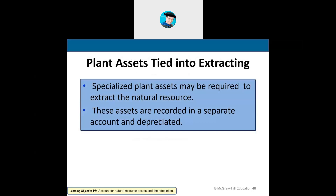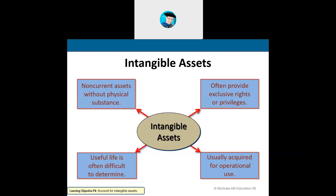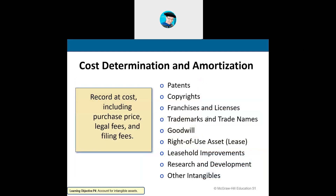There are also specialized plant assets required to extract natural resources from the earth. Intangible assets are assets you cannot physically touch — examples include patents, trademarks, and copyrights. They're typically classified as non-current assets with usefulness over time, usually acquired from other operations with exclusive rights or privileges. Examples include patents, copyrights, franchise licenses, trademarks, goodwill, right of use, leasehold improvements, and research and development.